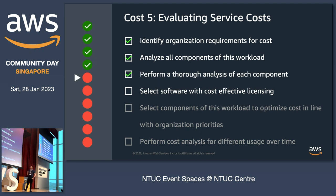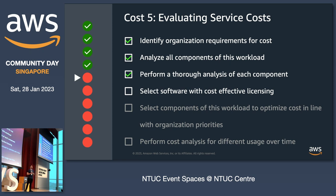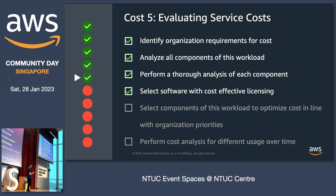Last but not least: select software with cost-effective licensing. I normally advise customers to use open source software. But even open source software can sometimes be licensed. If you really need the tool, at least make sure it's not bounded to an arbitrary attribute such as CPU count. I remember a customer who needed an EC2 instance with 512 GB of RAM and just two CPUs because they were bounded to CPUs. Make sure licensing is oriented to the business outcomes you're trying to achieve. With that, we've flipped our fifth high risk.